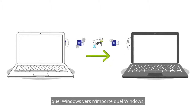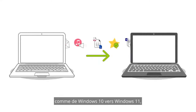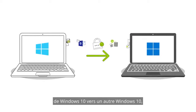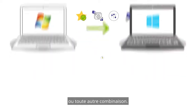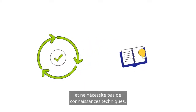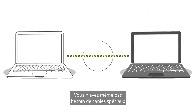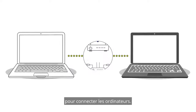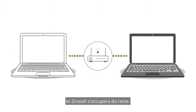You can transfer from any Windows to any Windows, such as Windows 10 to Windows 11, Windows 10 to another Windows 10, or any other combination. The transfer is automatic and does not require technical knowledge. You don't even need special cables to connect the computers — just get both online and Zinstall will take care of the rest.